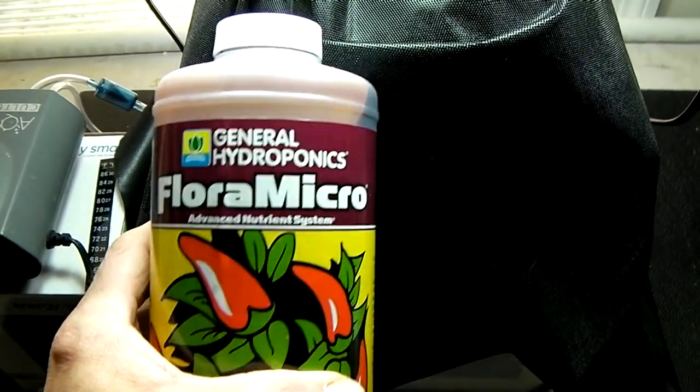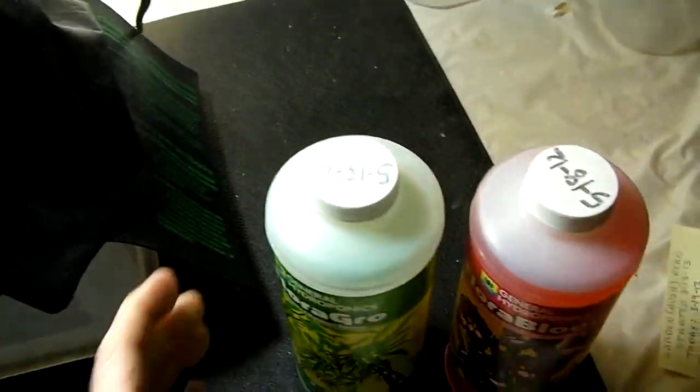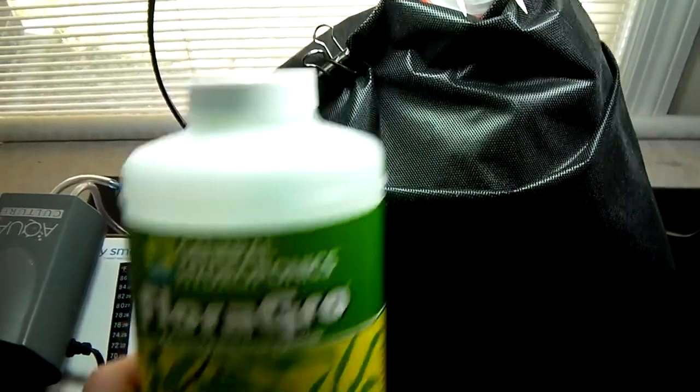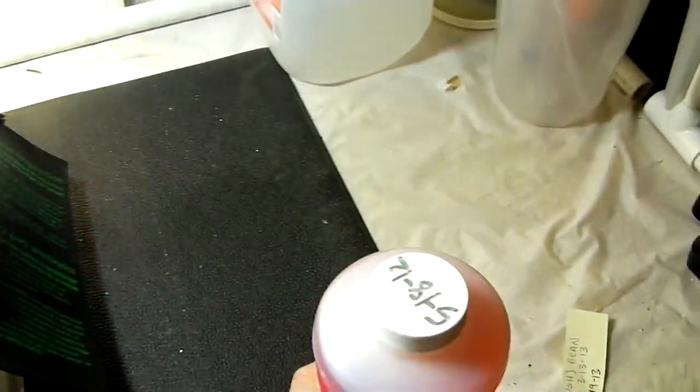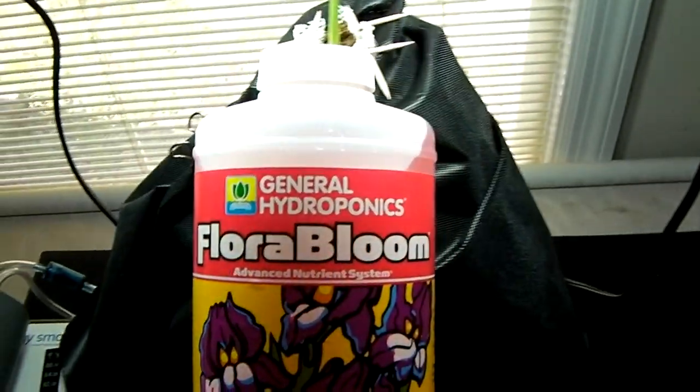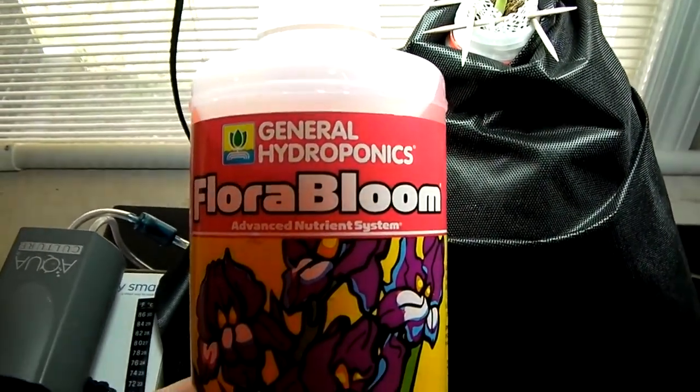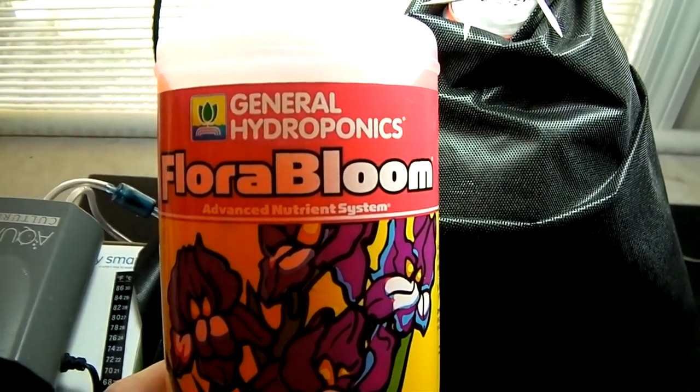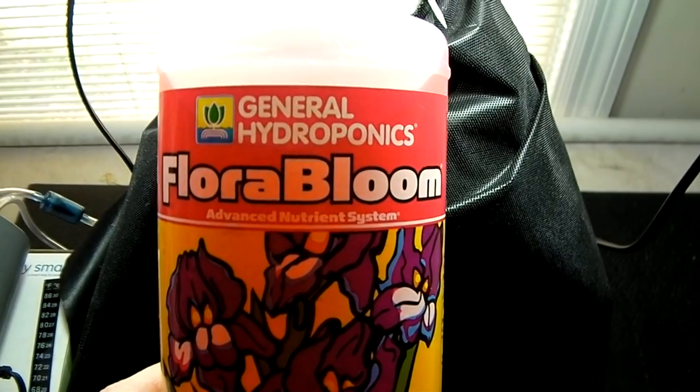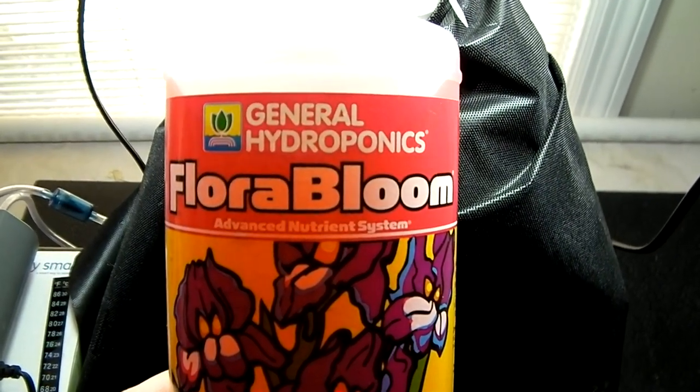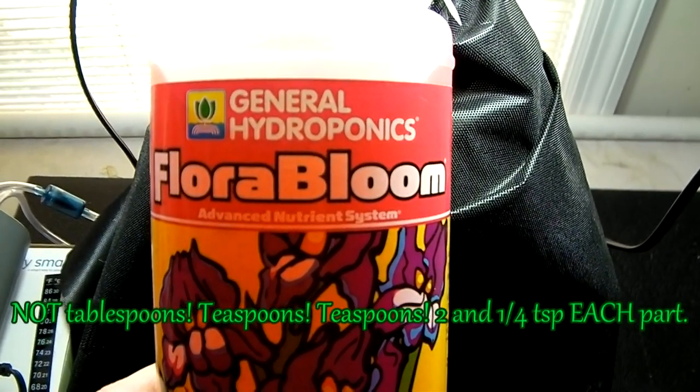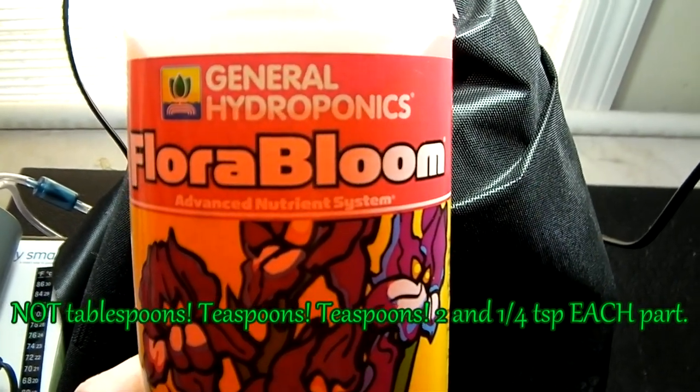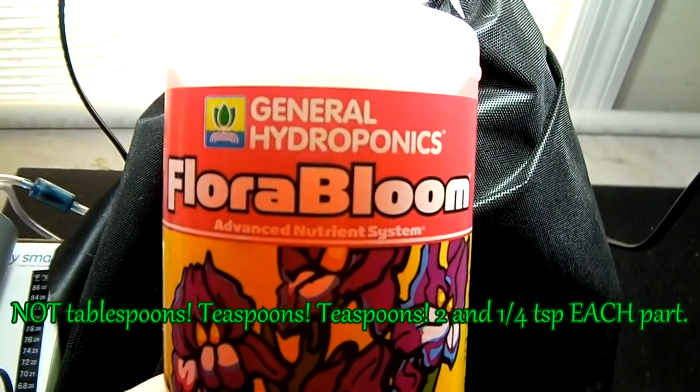And this is a three-part system, like I've showed you before. This is the flora micro. This is the flora grow. And this is the flora bloom. In a combination of three, there are instructions on the bottle how to mix it for various plants in various situations. I pretty much use a 2-2-2 mixture. That's two tablespoons of each into a gallon of water. And I usually add about a half an ounce of hydrogen peroxide along with that.